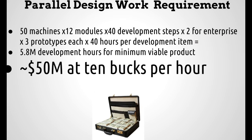Let's talk a little about money. For a parallel design method covering 50 machines, how many hours of development time does it take? It's about 50 million hours if you pay people $10 per hour. That's 50 machines times 12 modules times 40 development steps, times another 2 for the enterprise steps, times 3 prototypes, times 40 hours per development item — gets you 5.8 million development hours. That's for minimum viable product: three prototypes that are almost ready for mainstream adoption. We don't have that money, so we rely on volunteers.